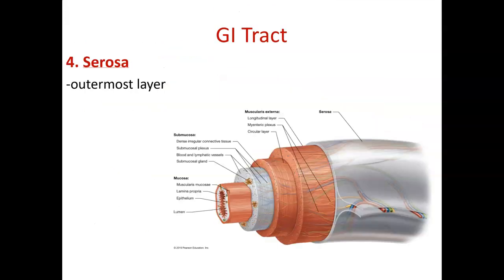The serosa is just the outer layer. It helps protect and anchor the GI organs to other organs in the area, serving mainly as structural support.